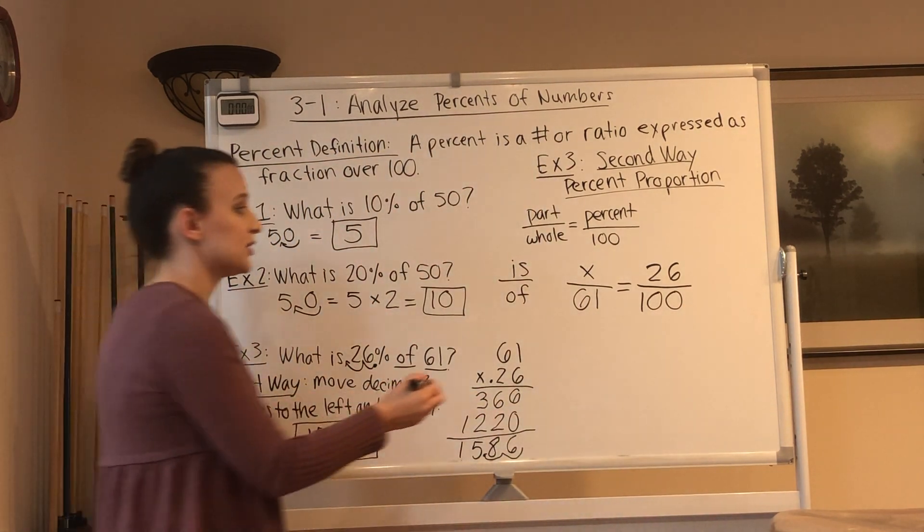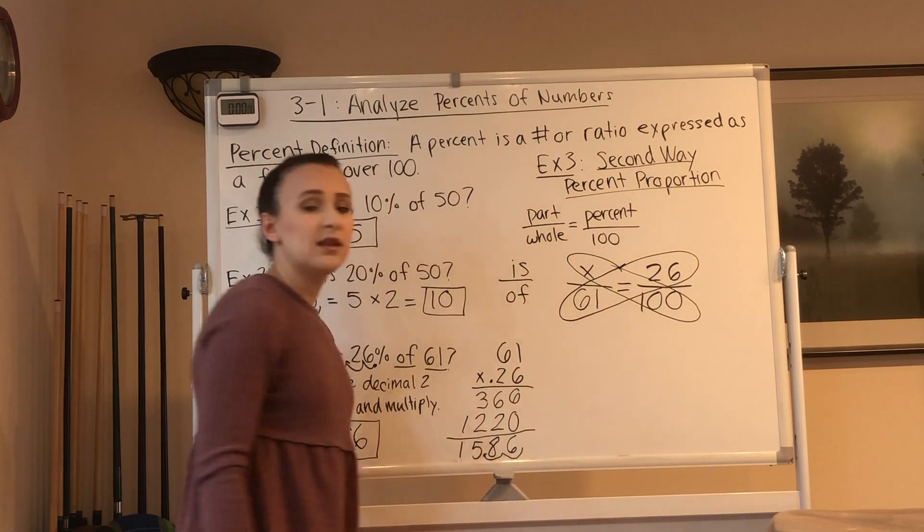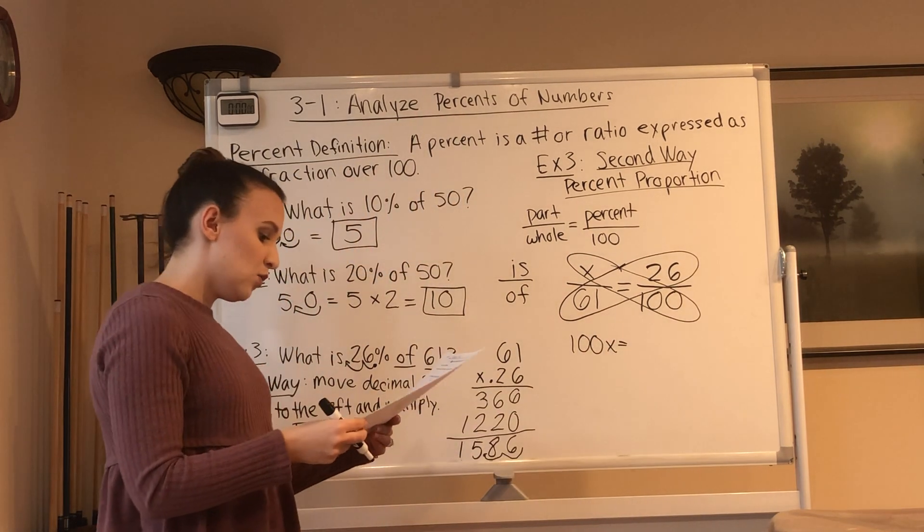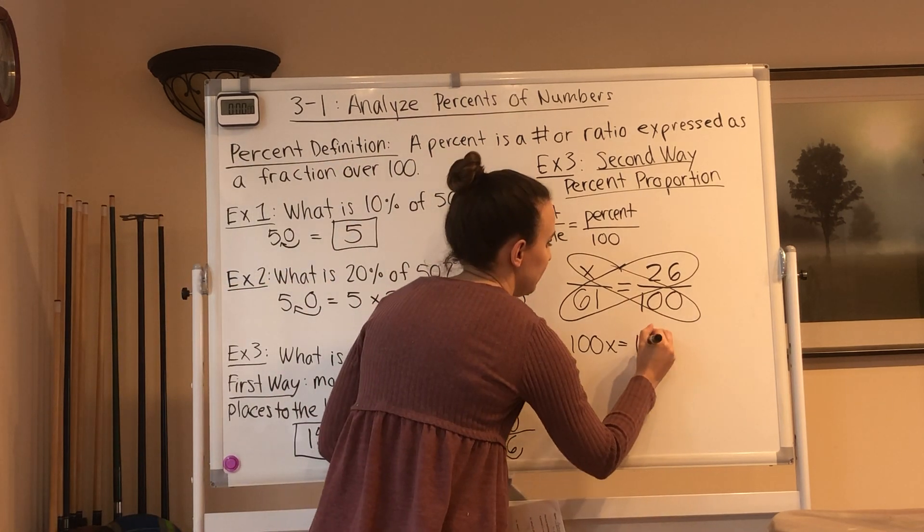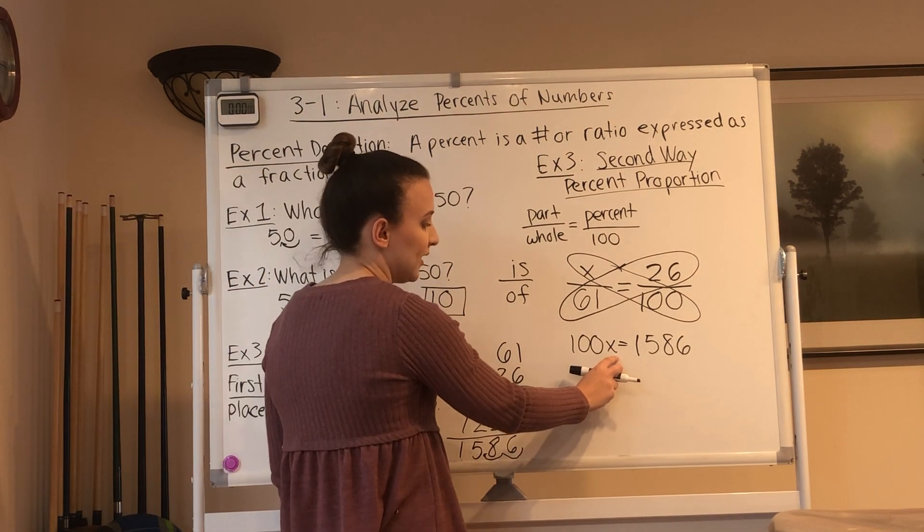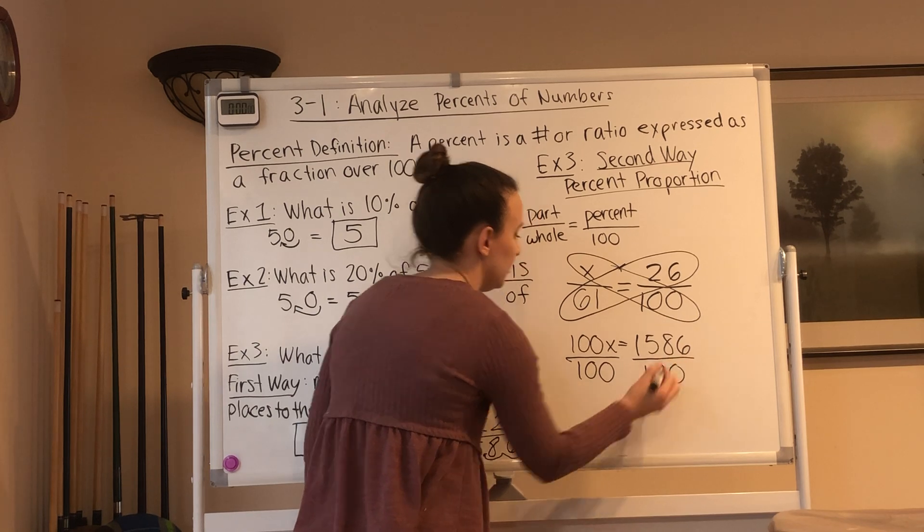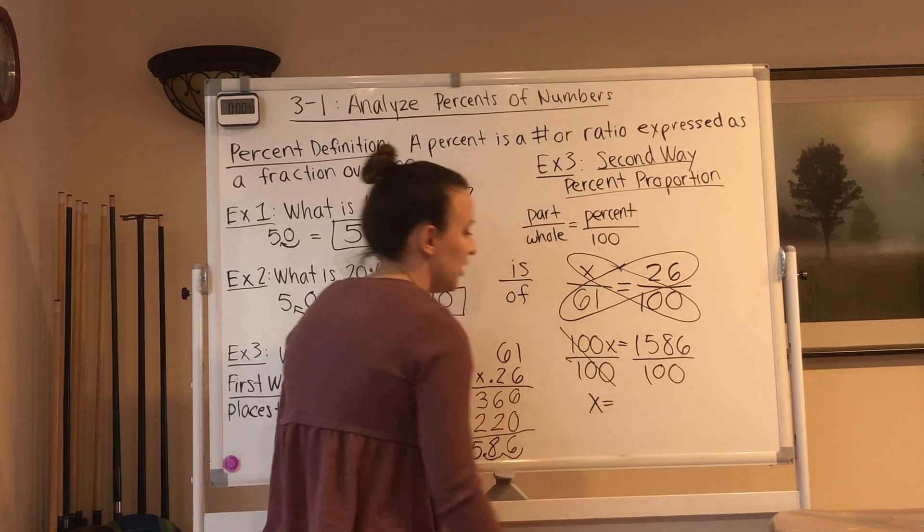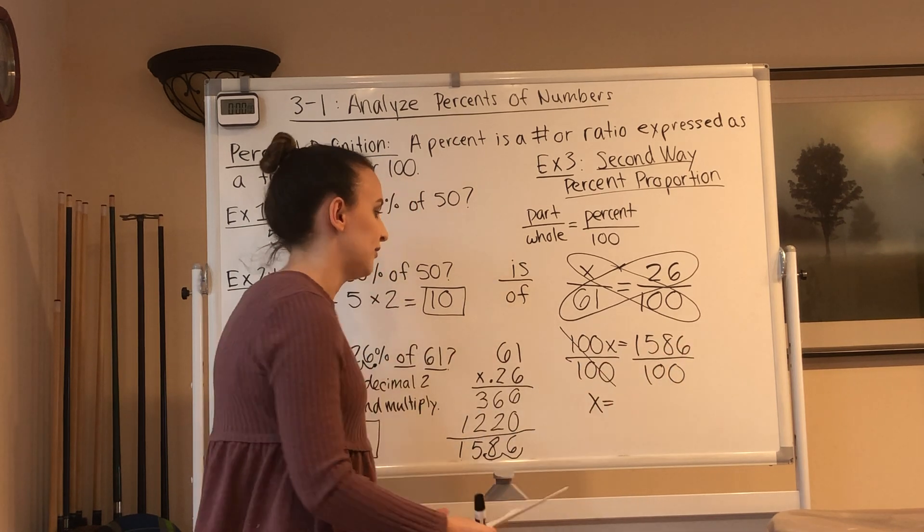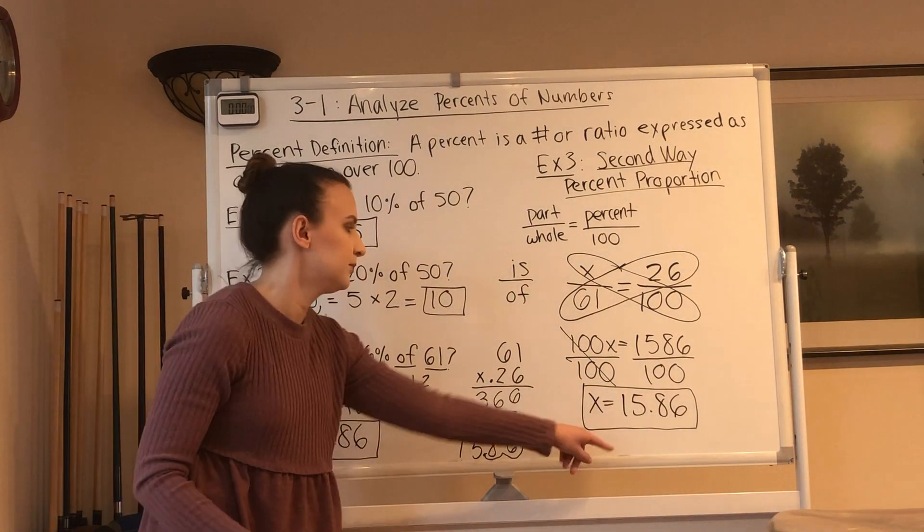Now to solve this proportion, we do the cross product. So we're going to multiply x times 100 and 26 times 61 and set them equal to each other. 100 times x is 100x. 61 times 26 is 1586. You can use the calculator for that. Now this says 100 times x. So to get rid of 100, I need to divide by 100. Divide by 100. So now we have x equals, remember when you divide by 100, you don't have to pull out your calculator for this. You're just moving the decimal two places to the left. So 15.86. See how we got the same answer?